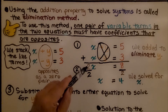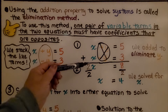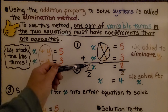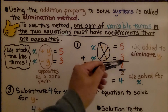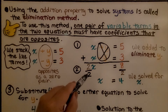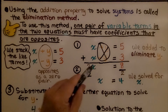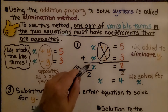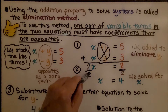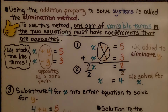All we're left with is our equation with one variable: two x equals eight. We solve for x by dividing both sides by the coefficient two, and we get x equals four.